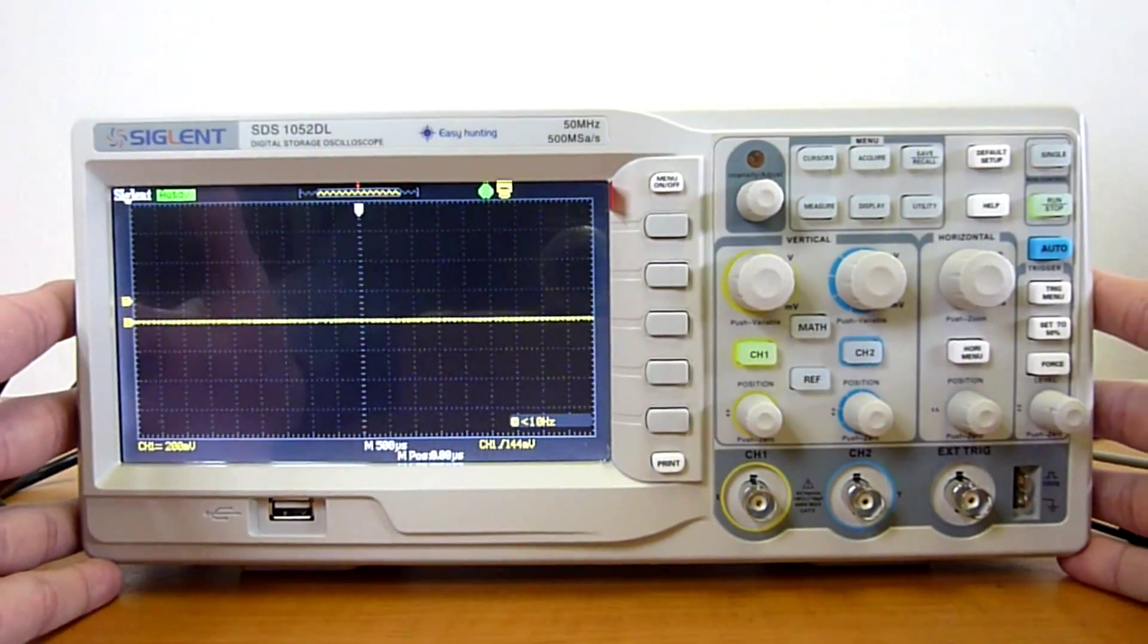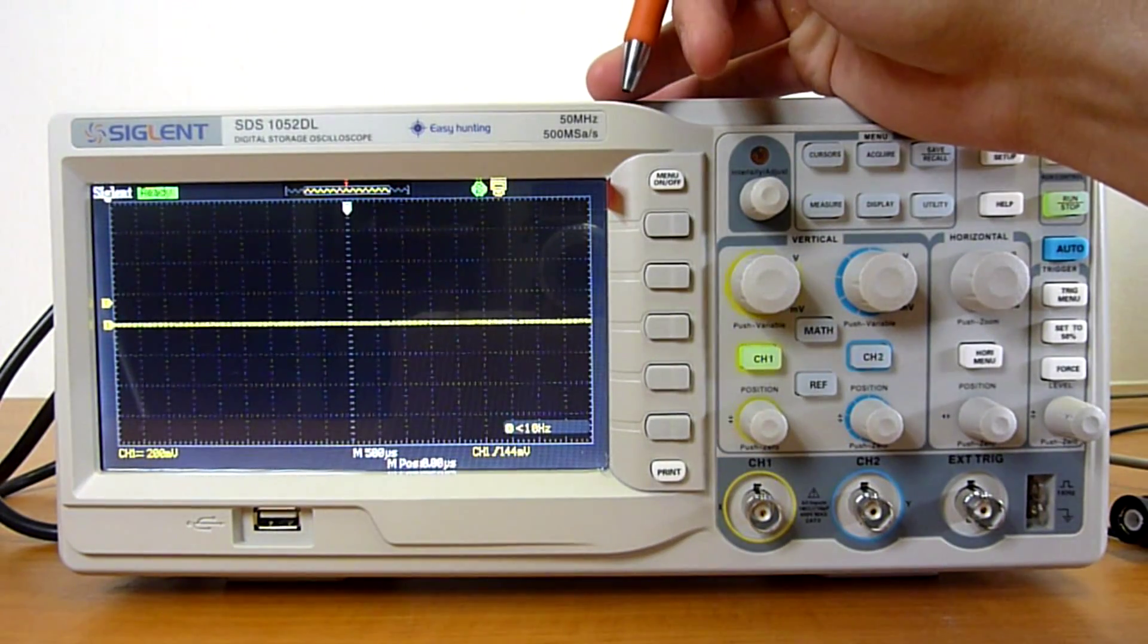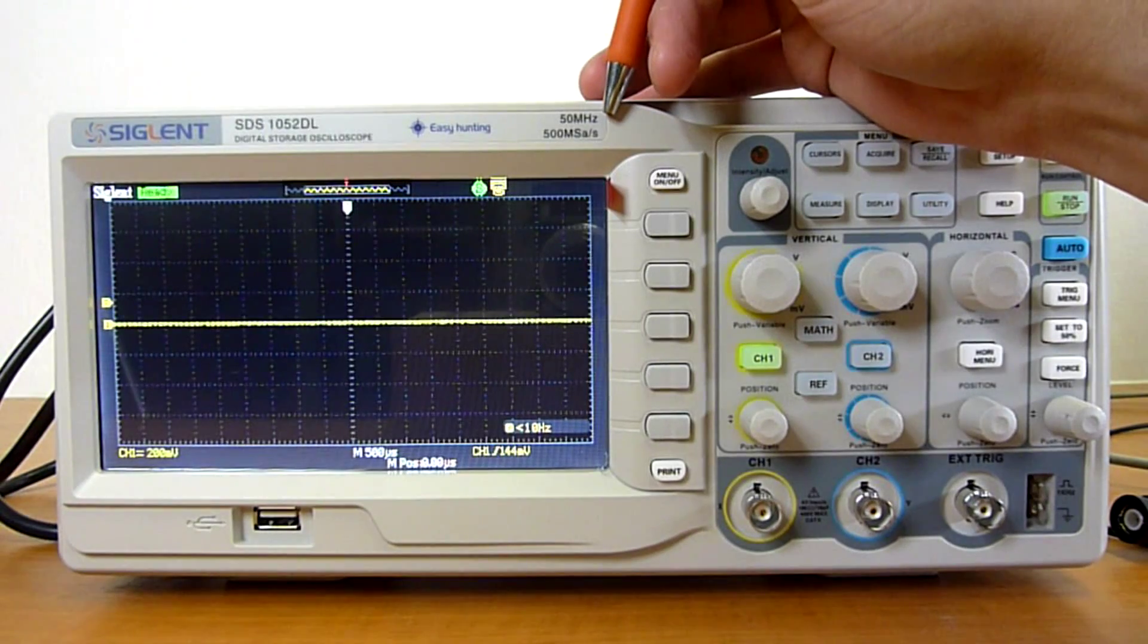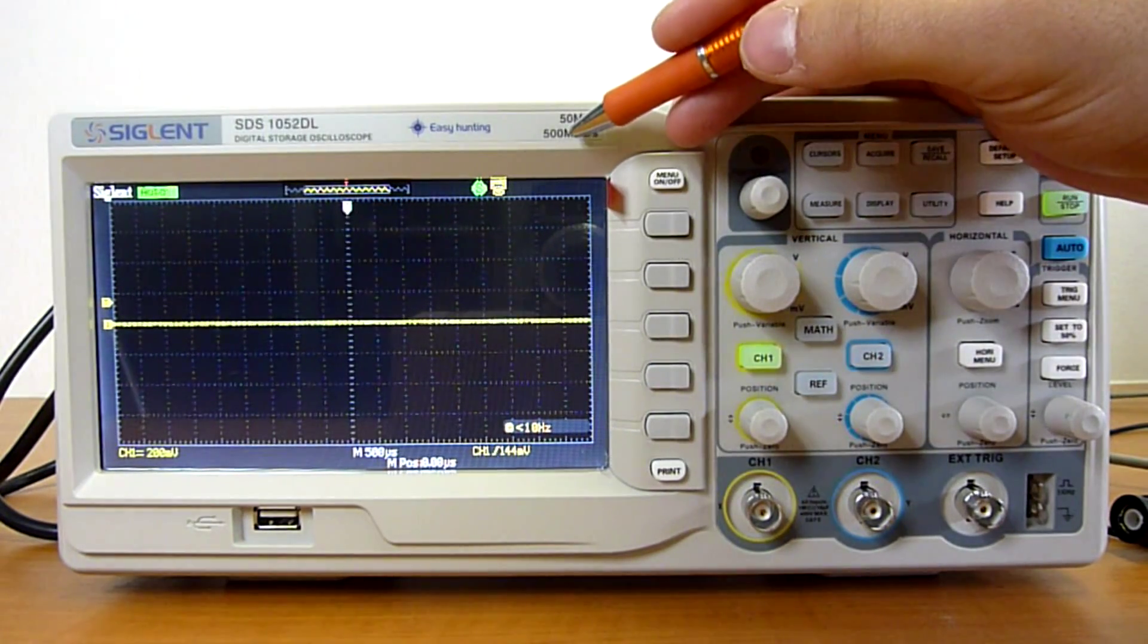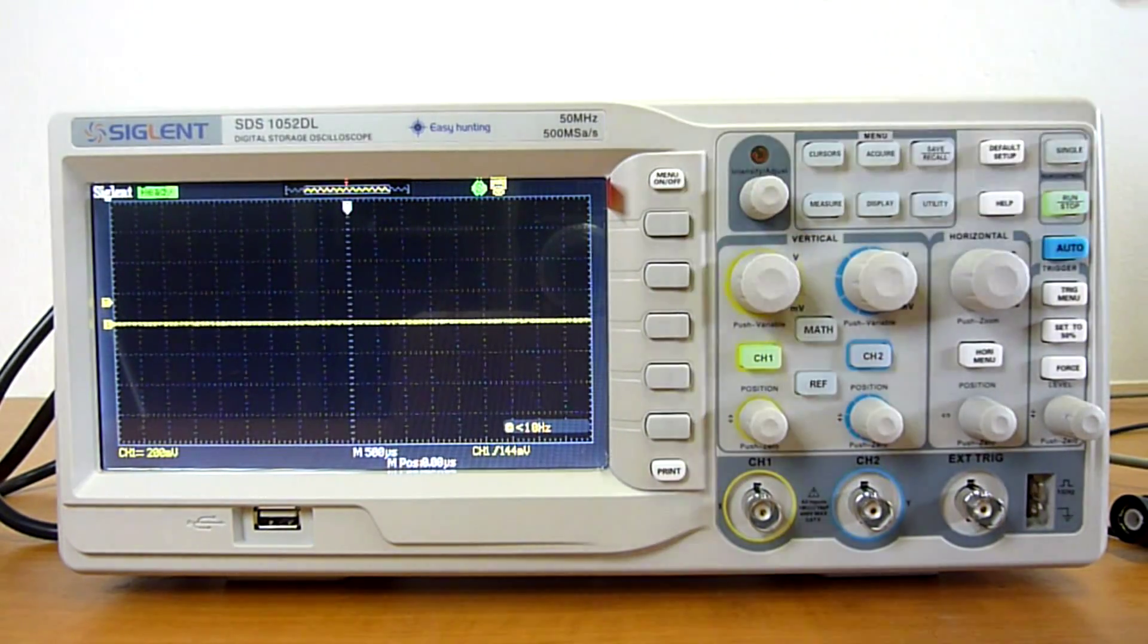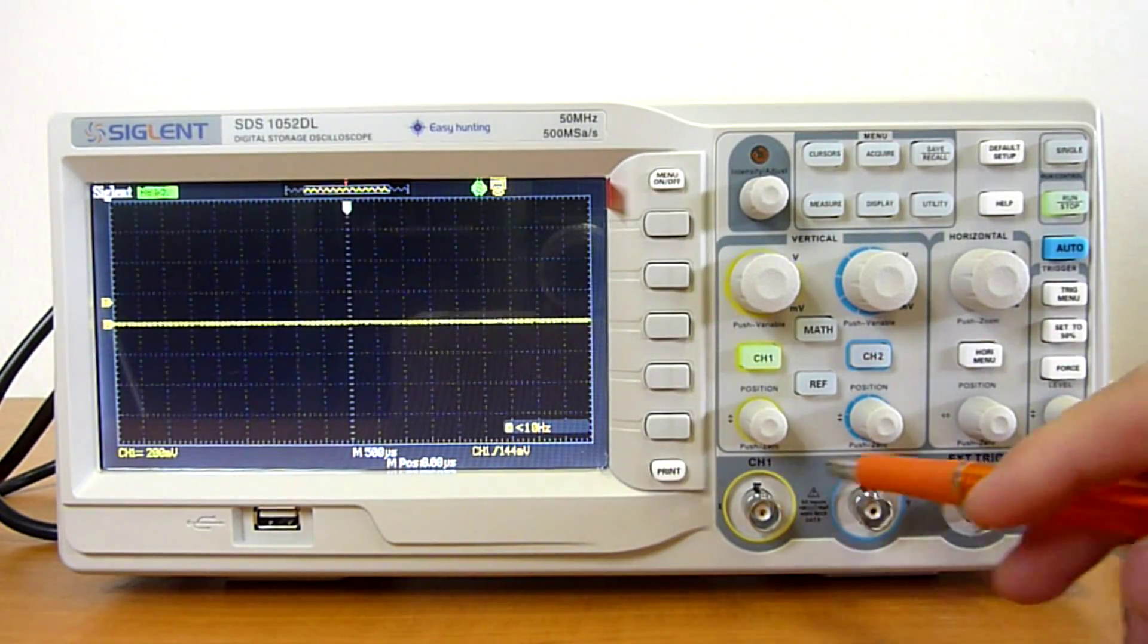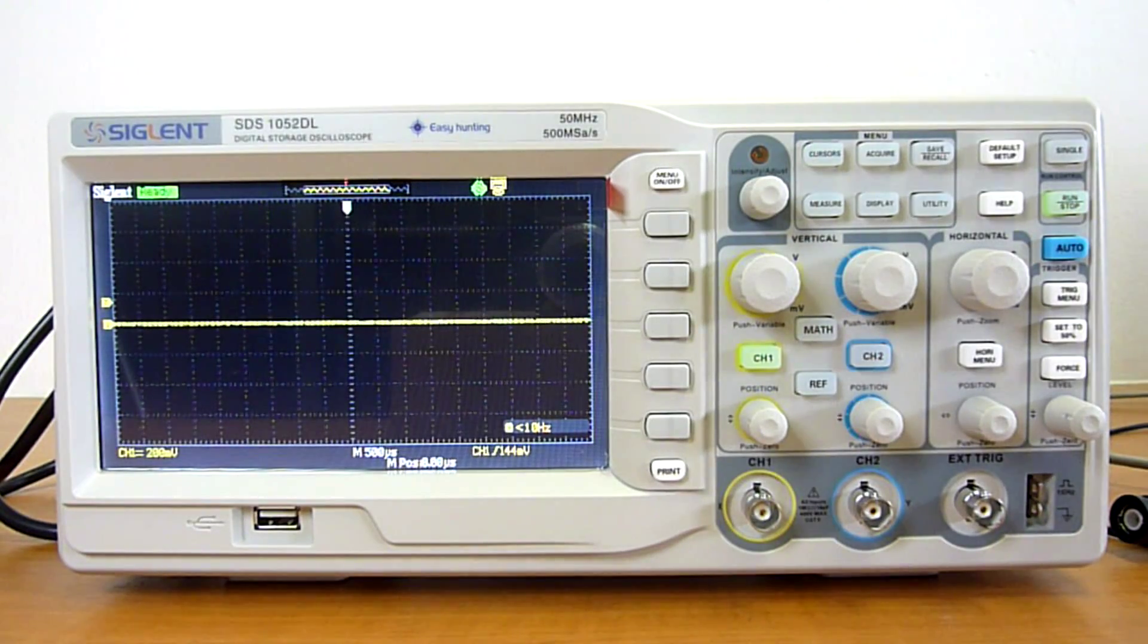So, let's tell you some basic data. The bandwidth of this scope is 50 MHz. The sampling frequency is 500 million samples per second. This is in case you use one channel. If you use two, it divides to 250 per each. Which is pretty normal these days.